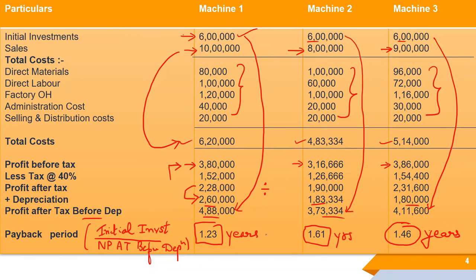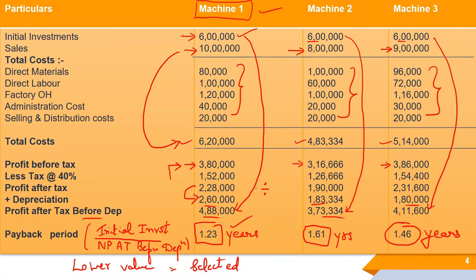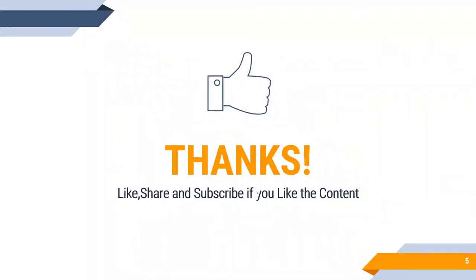For conclusion: in payback period analysis, the lower value is selected — the machine that returns the investment in the least time is the best. Comparing all three: 1.23, 1.61, and 1.46 years. Machine 1 has the lowest payback period. Therefore, Machine 1 should be selected because its payback period is less compared to Machine 2 and 3. I hope this calculation was clear. Thank you everyone, bye bye, take care.